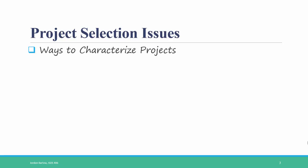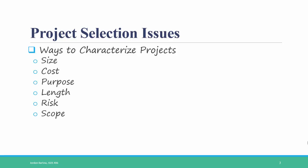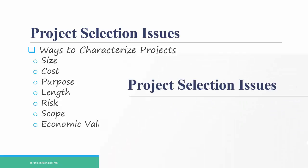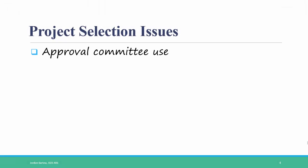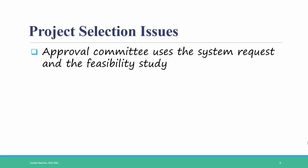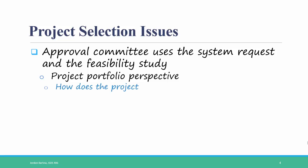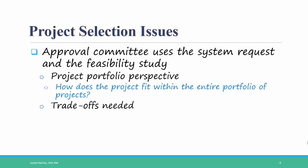There are several different ways to categorize or characterize projects, including by size, cost, purpose, length, risk, scope, and economic value. An approval committee uses the system request and the feasibility study to determine which projects to begin. Using these documents and the characteristics listed, most organizations take a project portfolio perspective — that is, organizations ask: how does the project fit within the entire portfolio of projects? This involves making trade-offs on various characteristics in order to select projects to form a balanced portfolio.